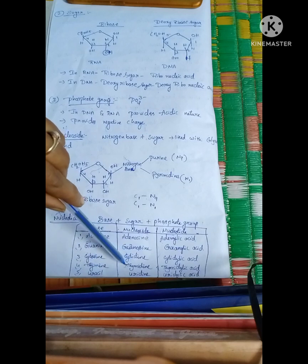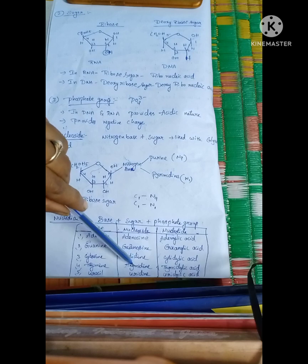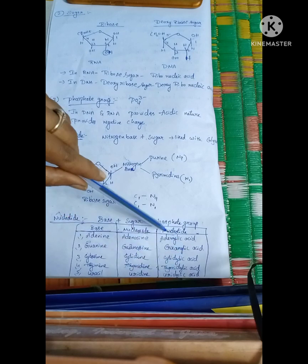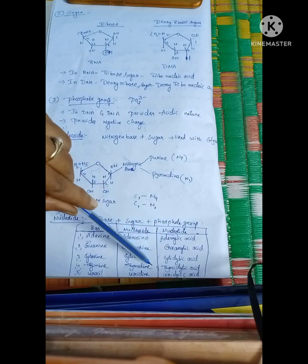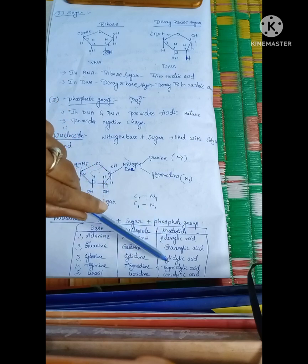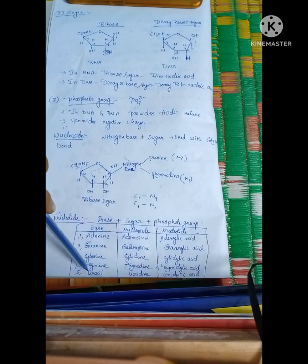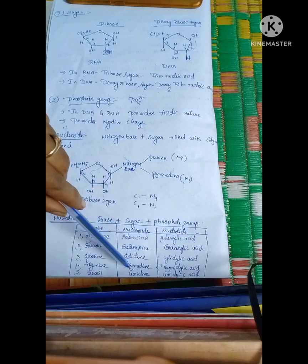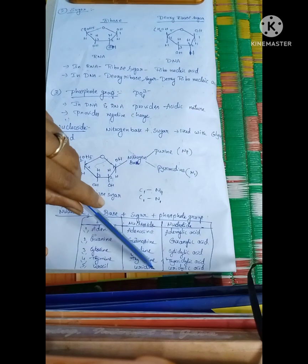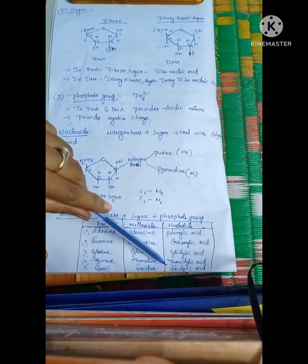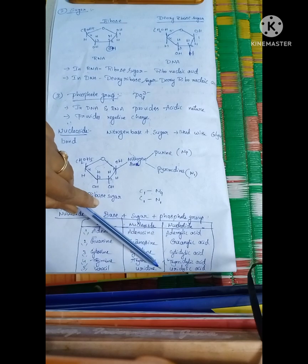Thymine with deoxyribose sugar forms the nucleoside thymidine. Thymidine with a phosphate group forms the nucleotide thymidylic acid. Uracil forms the nucleoside uridine, and uridine with a phosphate group forms uridylic acid.